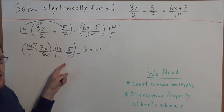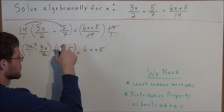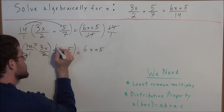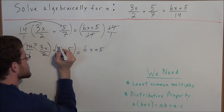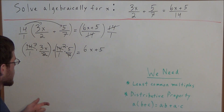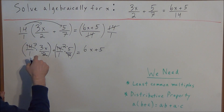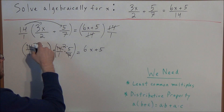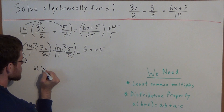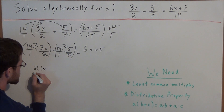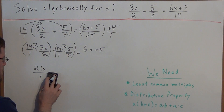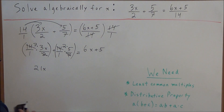We can do something similar for the second piece: 14 over 1 times 5 over 7. We have 14 in the numerator and 7 in the denominator. Since 14 divided by 7 is 2, we can cross off 14 and 7, and replace 14 with 2. So now simplifying the first term, we have 7 times 3x which is 21x, and the denominator is 1, so we're left with just 21x.